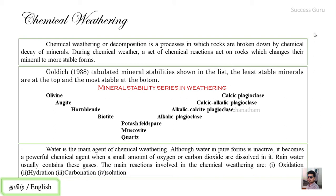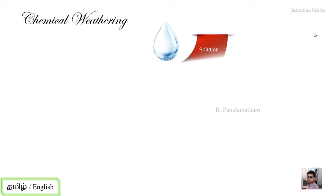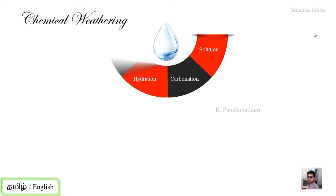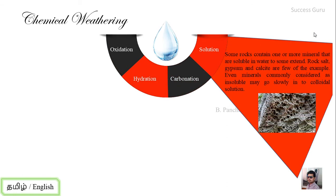Let's look at the first process: solution. In solution, rocks dissolve in water. For example, gypsum and calcium — as well as rock salt — dissolve easily when in contact with water. These soluble materials are carried away in solution.